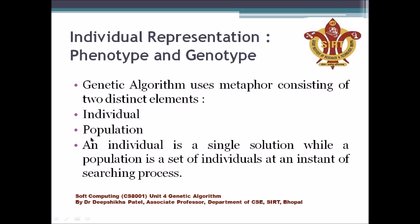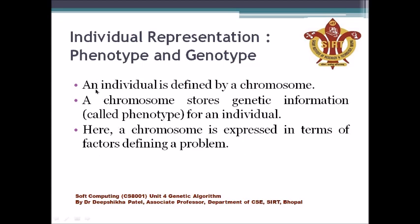An individual is a single solution, and population is a set of solutions. An individual is defined by a chromosome. A chromosome stores genetic information for an individual. A chromosome is defined by different characteristics, and those characteristics are called genes.